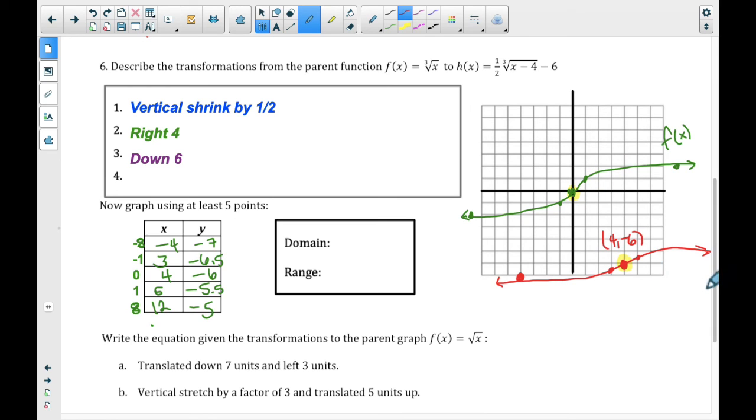All right, your graph should look something like this. Mine is actually a little bit too tall there. I feel like it should be more like that. So let's take a look. Vertical shrink by 1 half. So instead of being this tall, it should be something like this tall, right? Then right 4, down 6, lands me right here. So here I am, but instead of going up 1, I'm just going to go up 1 half, and then over 7, and up another half. Down 1, over 7, down 1, sorry, down 1 half,